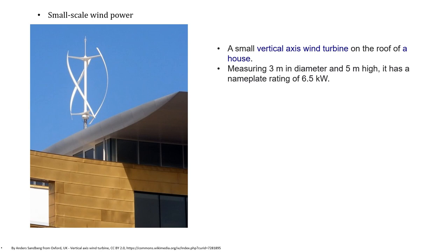A small vertical axis wind turbine on the roof of a house is shown here, measuring 3 meters in diameter and 5 meters in height with a nameplate rating of 6.5 kilowatts. Small-scale wind power refers to wind generation systems with the capacity to produce up to 50 kilowatts of electrical power. Isolated communities that may otherwise rely on diesel generators may use wind turbines as an alternative. Individuals may purchase these systems to reduce dependence on grid electric power or to reduce their carbon footprint. Wind turbines have been used for household electrical power generation in conjunction with battery storage over many decades in remote areas, and are ideal for running small household-scale businesses.